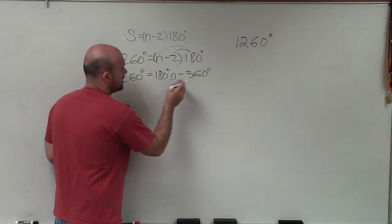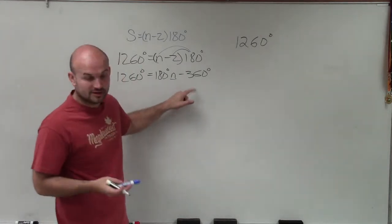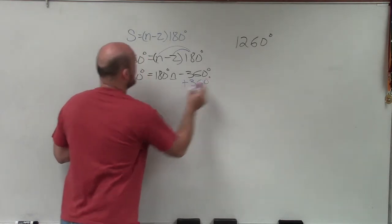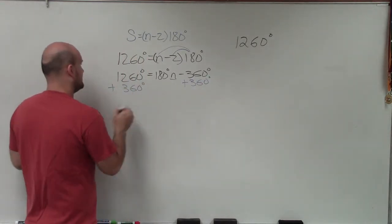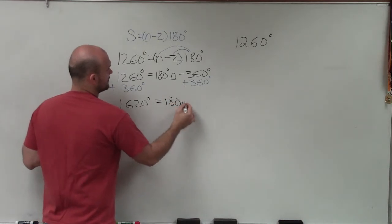I look at my variable and say, all right, what is happening to the variable that I need to undo? Well, you can see that the variable is being subtracted by 360, so we always undo addition and subtraction first. So I'm going to add 360 degrees on both sides. Therefore, I'm going to have 1,620 degrees equals 180 degrees n.